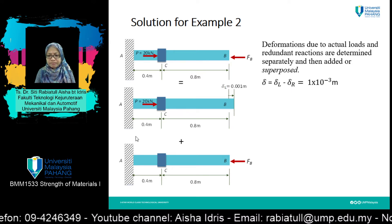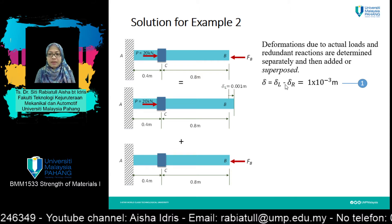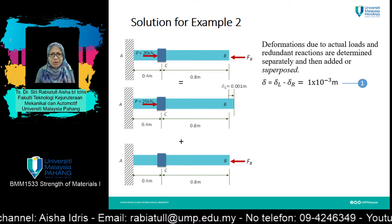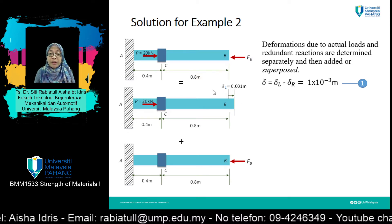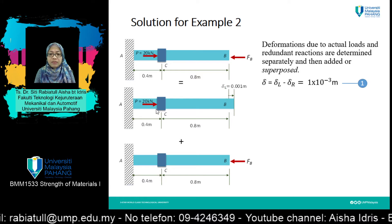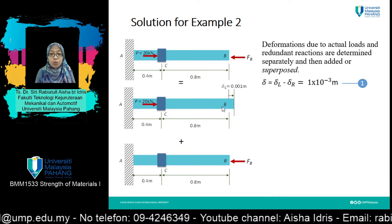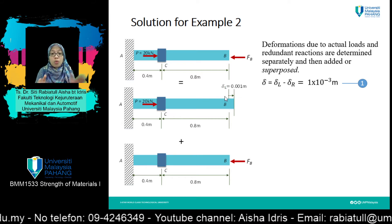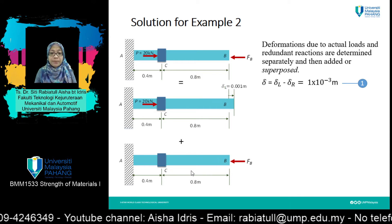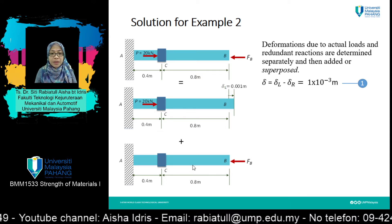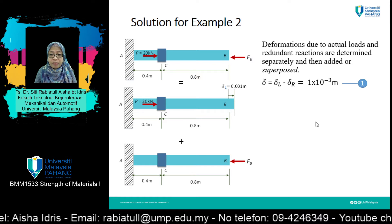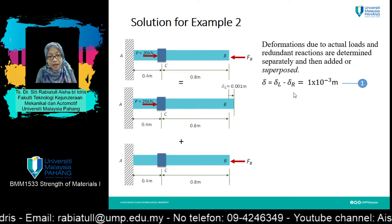Notice that this equation uses minus, whereas the previous example used plus. Referring back to the figure: the structure will elongate due to loading — that is positive delta. Whereas for the elongation due to redundant load, the structure will contract back because of the redundant force, so delta will have a negative value there.